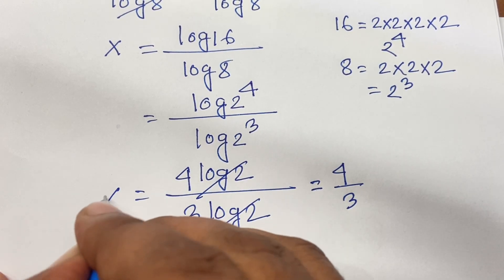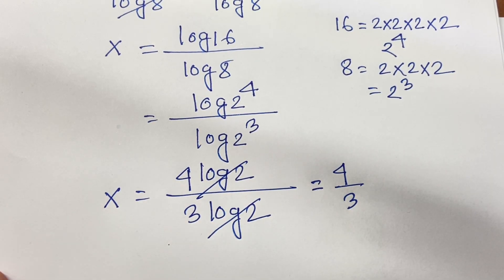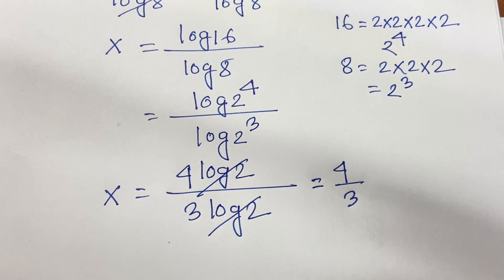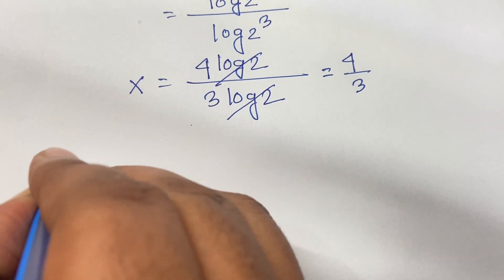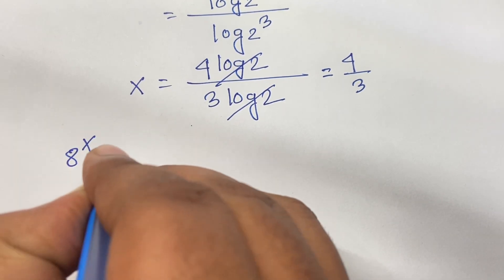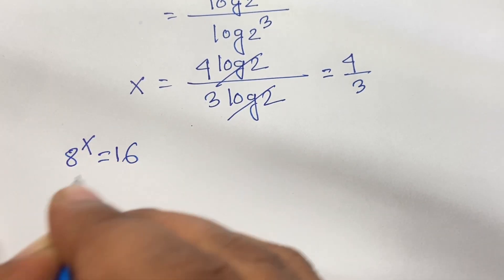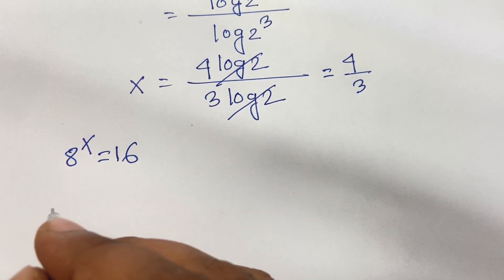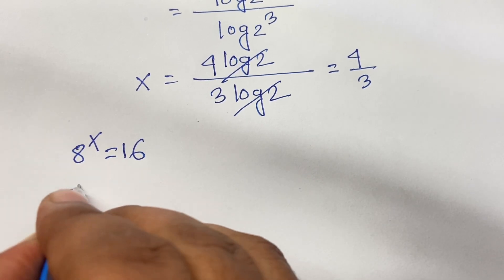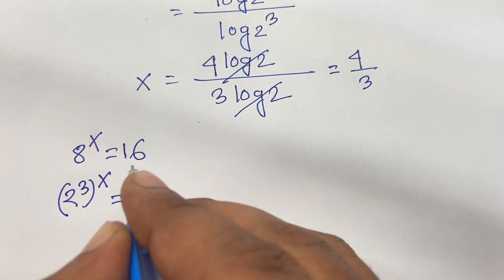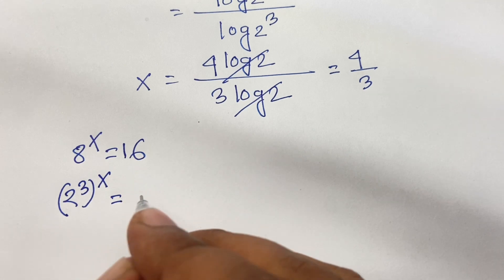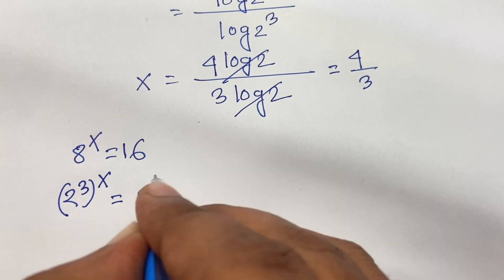This is the value of x. Now if I solve this question using another method, our first equation is 8 power x equal to 16. I can write 8 as 2 to the power 3, bracket power x, equal to 16, which is 2 to the power 4.